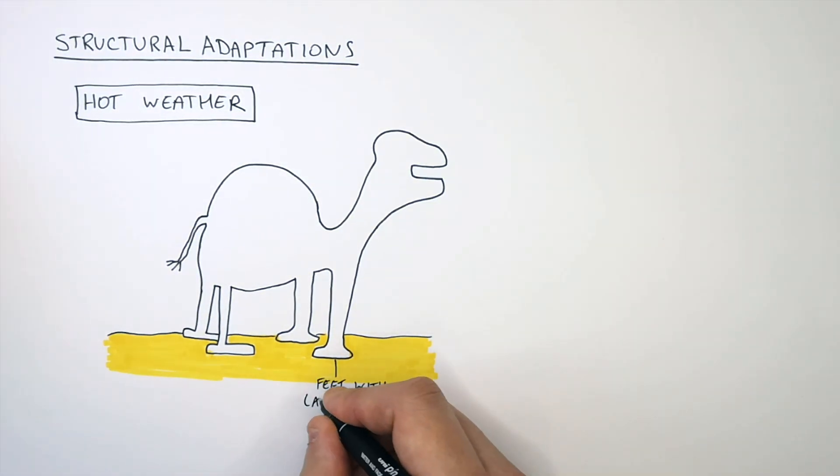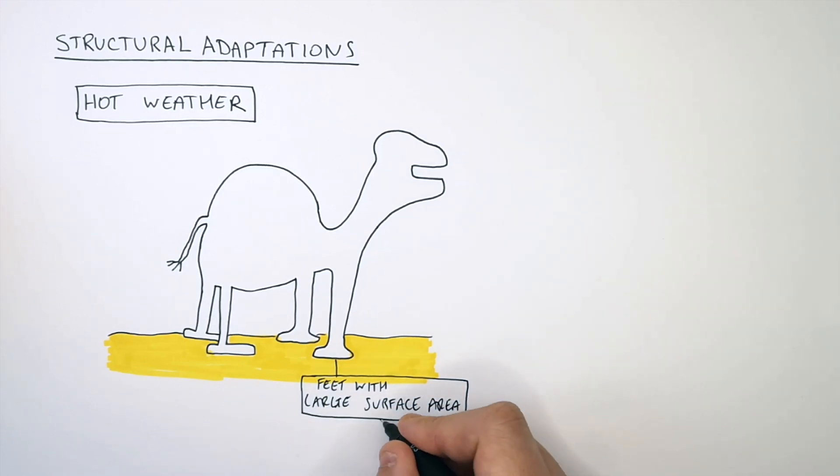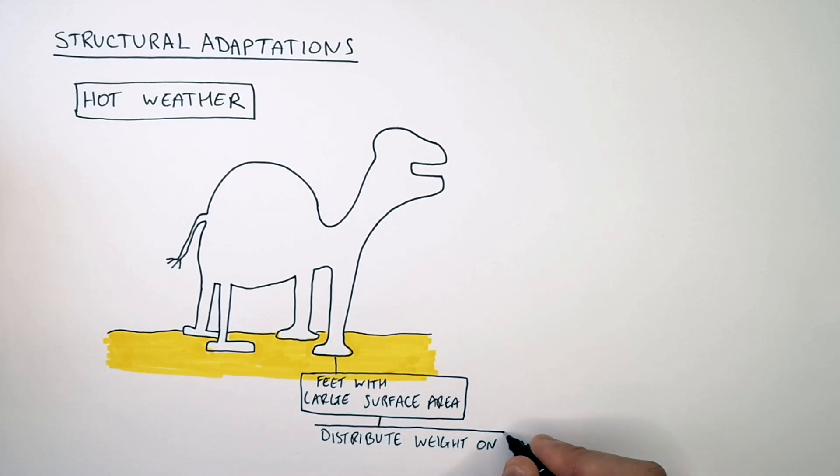Camels have feet with a large surface area. This is to distribute their weight evenly on the sand so they do not sink into the sand.